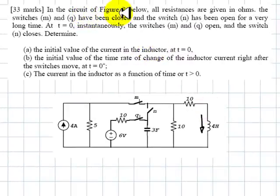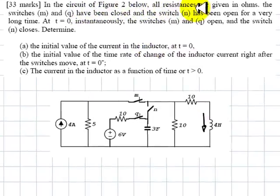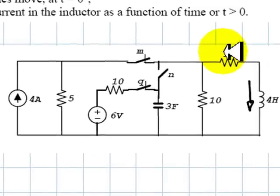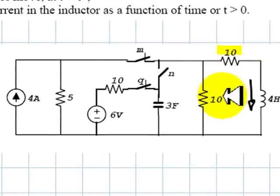In the circuit of figure 2 below, all resistances are given in ohms: 10 ohms, 10 ohms, 10 ohms and 5 ohms.